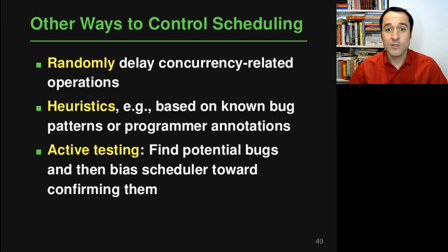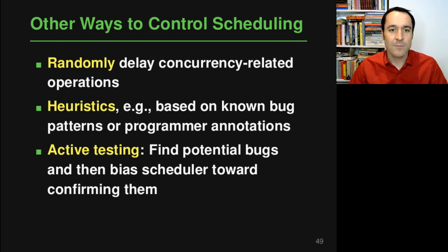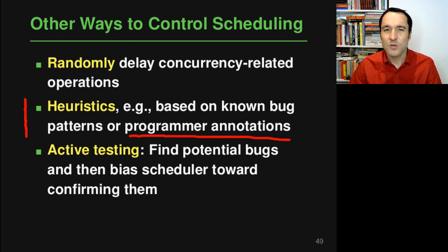There are also other ways of controlling scheduling decisions. One surprisingly effective approach is to randomly delay some concurrency-related operations — for example, randomly delaying a thread trying to acquire a lock, hoping to trigger a different interleaving. Other work uses various heuristics to influence the scheduler based on known bug patterns. Additionally, programmer annotations can be used: if a programmer explicitly marks a point where the program should wait, this can be used to control the schedule.